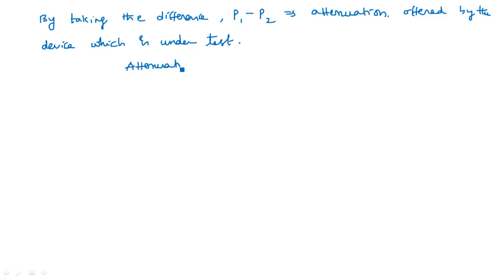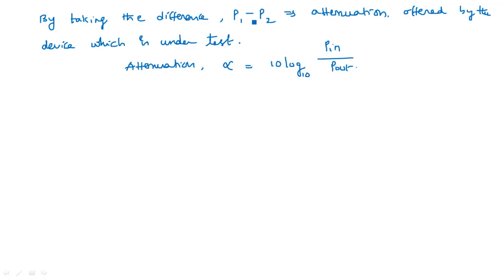Why is it called the power ratio method? Because attenuation alpha can be written as 10 log base 10 of (P_input / P_output), expressed in decibels. If we remove the logarithm, P1 minus P2 is the answer. Applying log: log(a) minus log(b) equals log(a/b). So it is the input power to output power ratio - that is why it is known as the power ratio method.